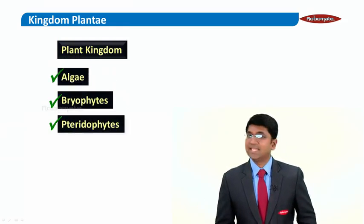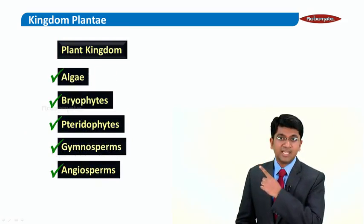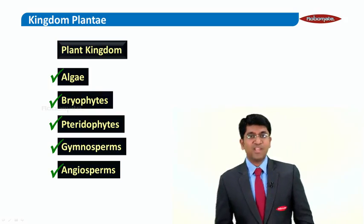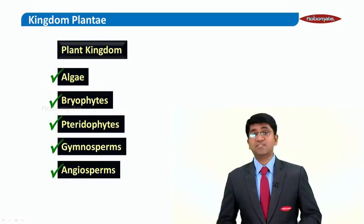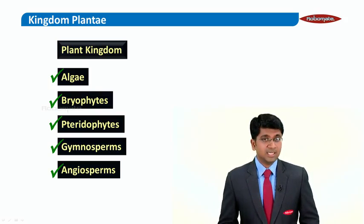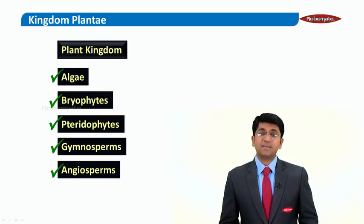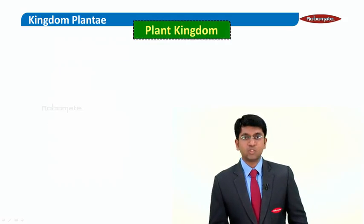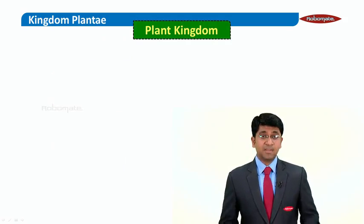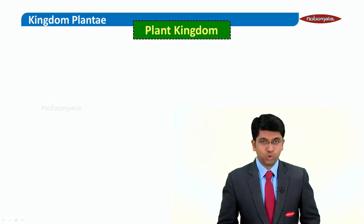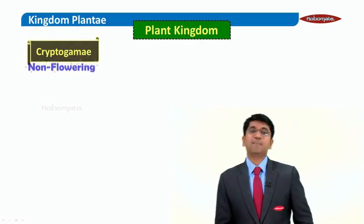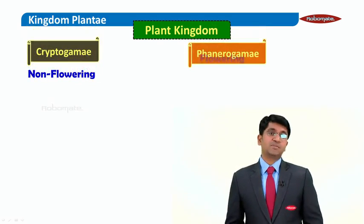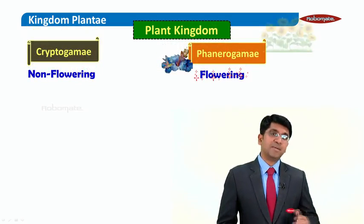So far we have seen that the plant kingdom is divided into various components: algae, bryophytes, pteridophytes, gymnosperms, and angiosperms. The entire plant kingdom is broadly divided into two groups — cryptogams, which are non-flowering plants, and phanerogams, which are flowering and seed-bearing plants.